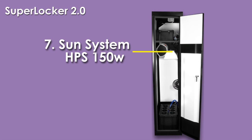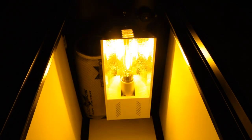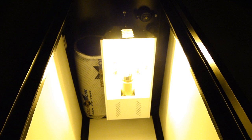Included with the Super Locker is a highly effective sun system grow light made of high quality parts installed with a 150 watt high pressure sodium bulb.